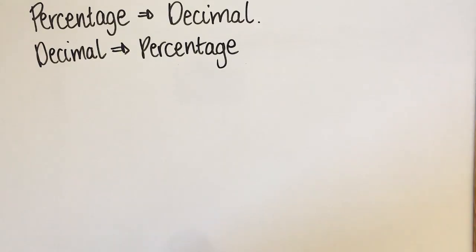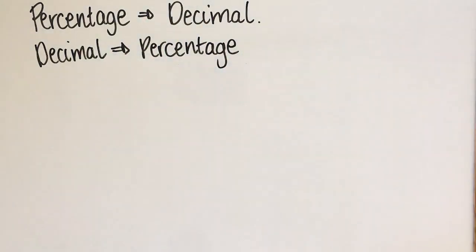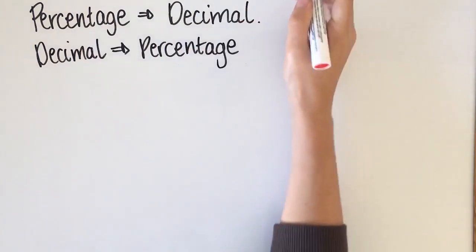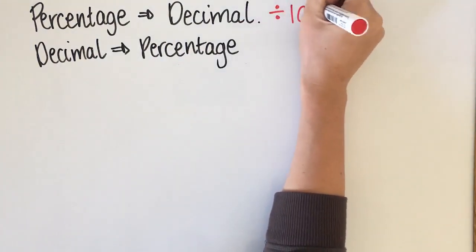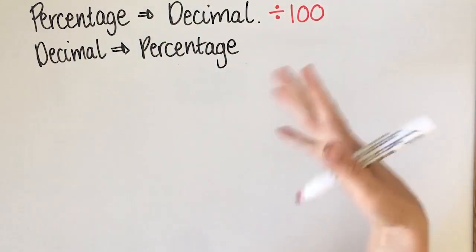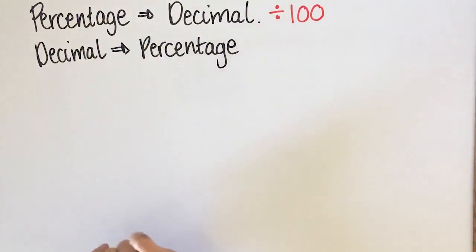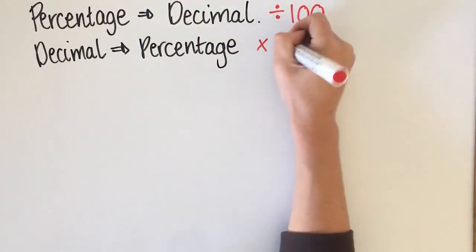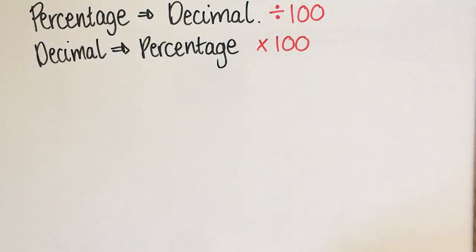The first one we're going to do is from a percentage to a decimal or a decimal to a percentage. This is actually quite simple and straightforward. To go from a percentage to a decimal you need to divide by 100, because a percentage is out of 100. To go from a decimal to a percentage you need to times the decimal by 100.